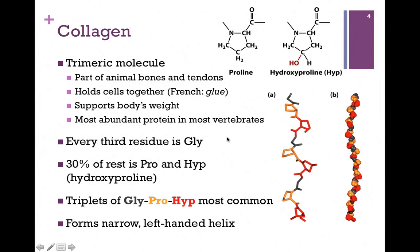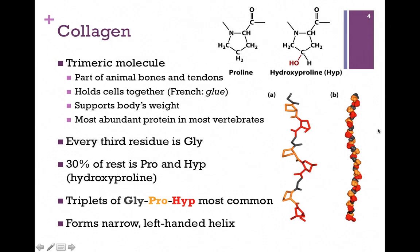You can see those structures at the top of the screen. Here's the familiar structure of proline, and we can add a hydroxyl group to the number two carbon to make hydroxyproline. The most common primary structure within collagen is a triplet of glycine, proline, and hydroxyproline, visible in the stick model in part A of the figure — glycine in gray, the proline ring in yellow, and hydroxyproline in red with that hydroxyl group hanging off the ring. It forms a narrow left-handed helix, seen more clearly in the space-filling model in part B — a very narrow helix, as if we took a regular alpha helix and stretched it out.